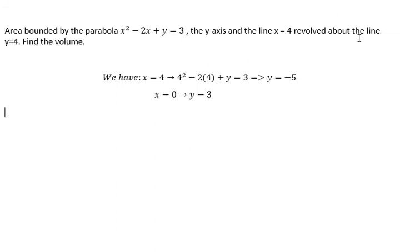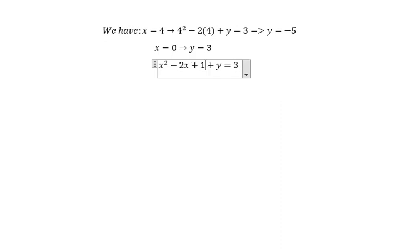Next, let's just revolve about the line y equals 4. So now we need to find the function of x based on the value of y. So in here we add number 1. On the right, we need to add number 1. Next, x squared minus 2x plus 1, so you will get x minus 1 to the power of 2. On the right, we have 4 minus y. Then we put about the square root, the square root of 4 minus y.